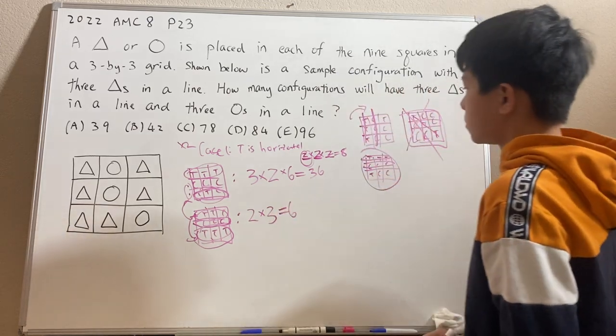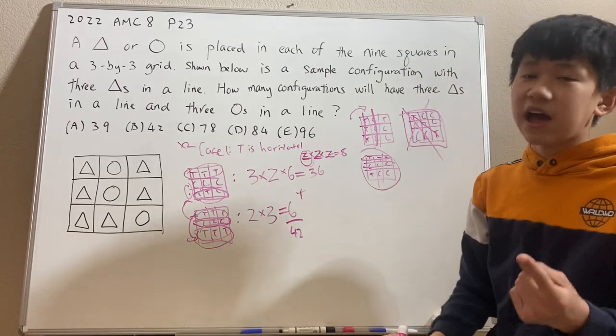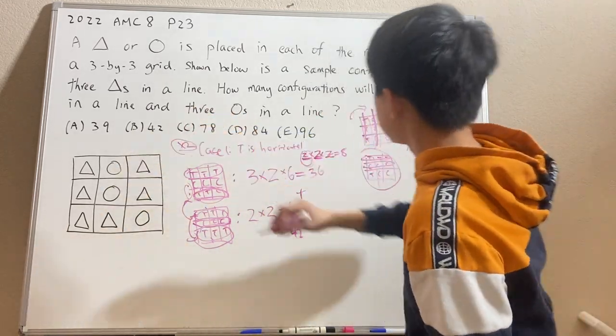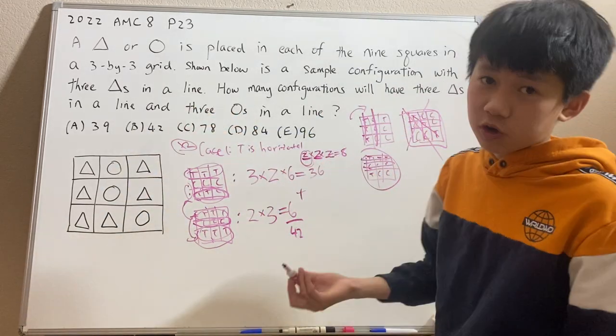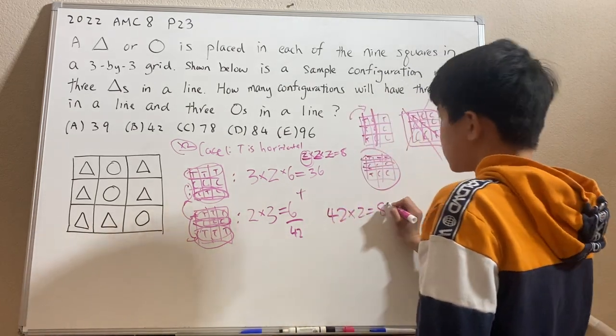So this is six. So if you add this together, that's actually equal to 42. But don't forget, you just multiply by two in the beginning, since we've got to account for T is vertical. So 42 times two, that's equal to 84, which is answer choice D. So that is our answer.